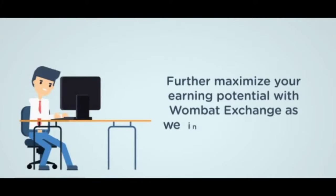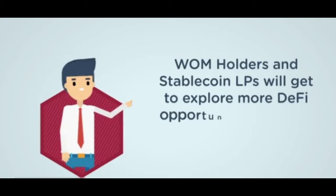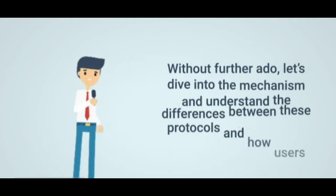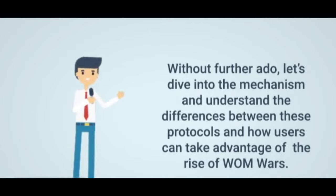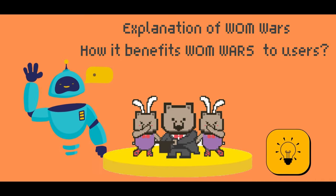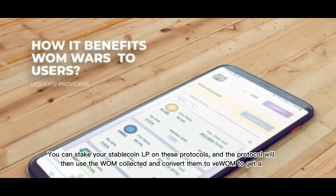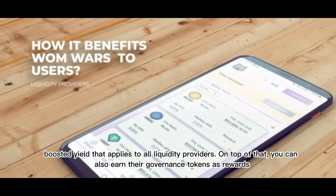Further maximize your earning potential with Wombat Exchange as we integrate three new yield-boosting protocols. WOM holders and stablecoin LPs will get to explore more DeFi opportunities and see better yields upon welcoming Wombix, Magpie, and Qual. Let's dive into the mechanism and understand the differences between these protocols and how users can take advantage of the Rise of Wombat Wars. You can stake your stablecoin LP on these protocols, and the protocol will then use the WOM collected and convert them to VOOM to get a boosted yield that applies to all liquidity providers.